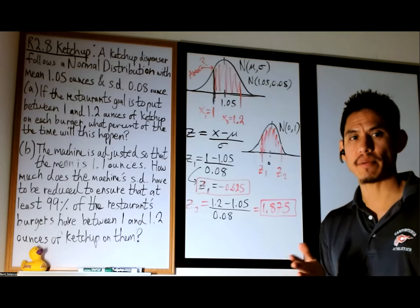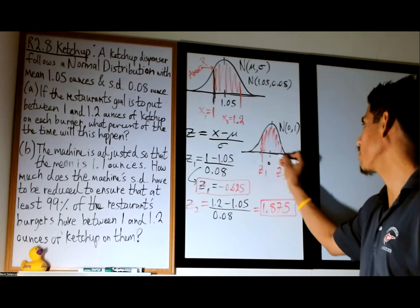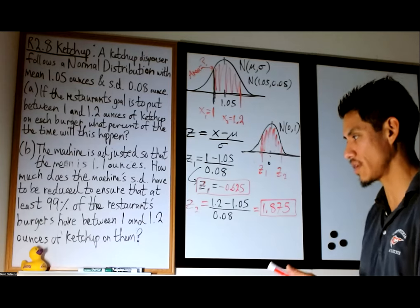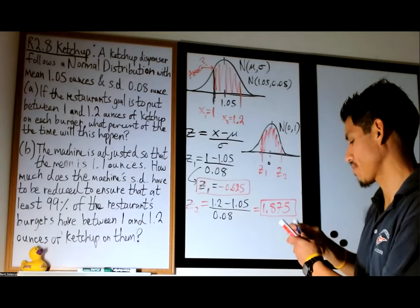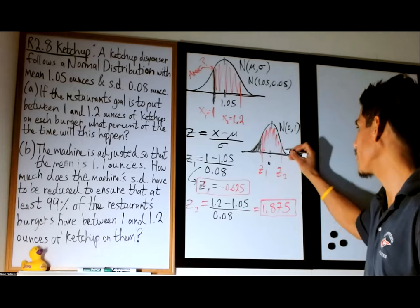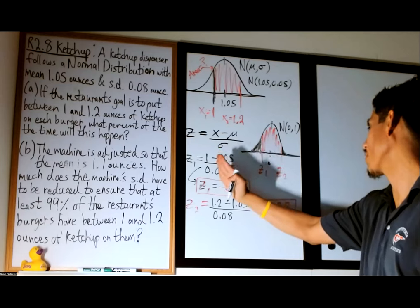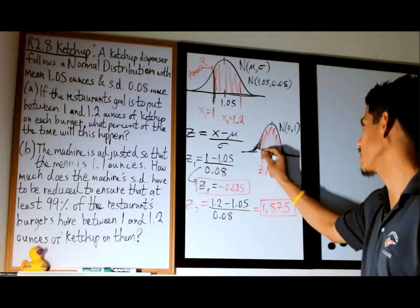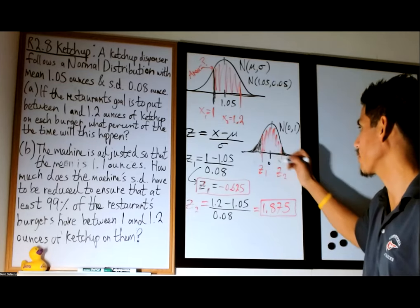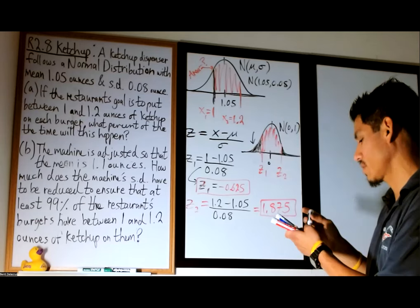We're going to use Table A. Remember, Table A only gives the area to the left. So we can use our understanding that the total area under this curve adds to 1. We can find the area to the left of z2 and subtract the area to the left of z1 from it. There are a couple of ways to go about it — you just have to be logical.